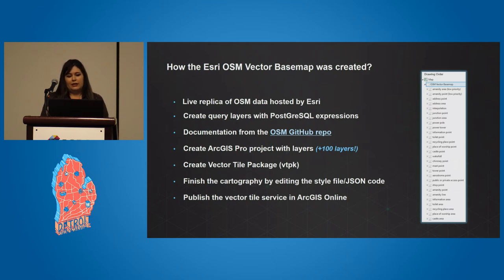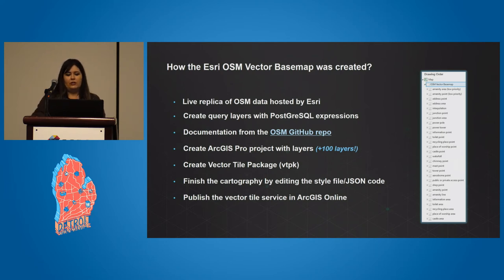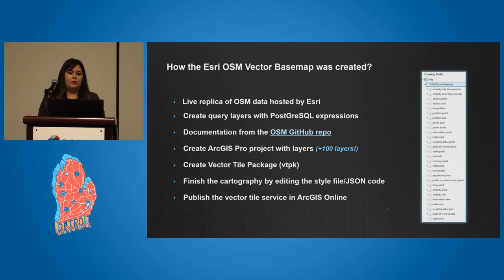After that, we created what we call a VTPK, or a vector tile package, which contains all the information on the tiling scheme, the cartography, and other resources. From that VTPK we extracted the style file, or the JSON code, to finish editing the cartography of the map. Because it's so complex and works throughout many scales, we had to finish it by editing the JSON code. After that, we put it back together into the package and then published it as a vector tile service in ArcGIS Online.